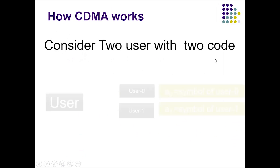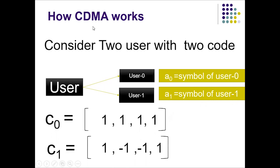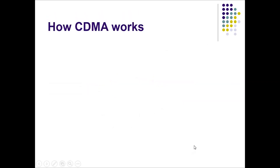Consider two users with two codes. The first user is user 0 and the second user is user 1, with symbols a0 and a1 respectively. In code division multiplex, suppose I define the code for user 0 as c0 = [+1, +1, +1, +1, +1], and I define the code for user 1 as c1.